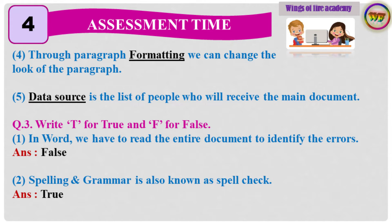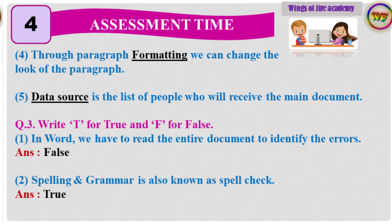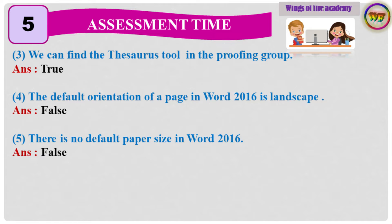Question 3: Write T for True and F for False. 1. In Word, we have to read the entire document to identify the errors. Answer: False. 2. Spelling and Grammar is also known as spell check. Answer: True. 3. We can find the Thesaurus tool in the Proofing group. Answer: True. 4. The default orientation of a page in Word 2016 is landscape. Answer: False. 5. There is no default paper size in Word 2016. Answer: False.